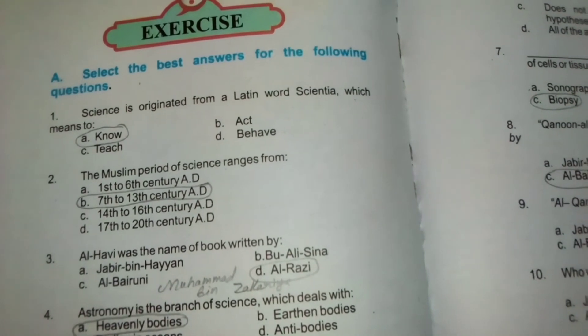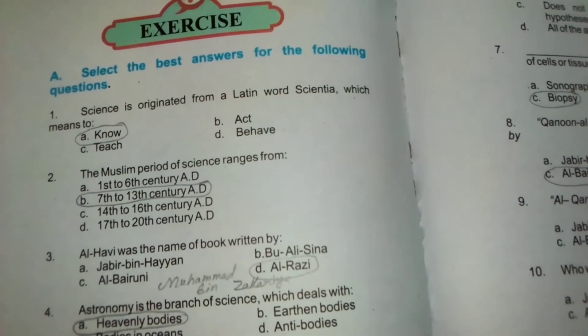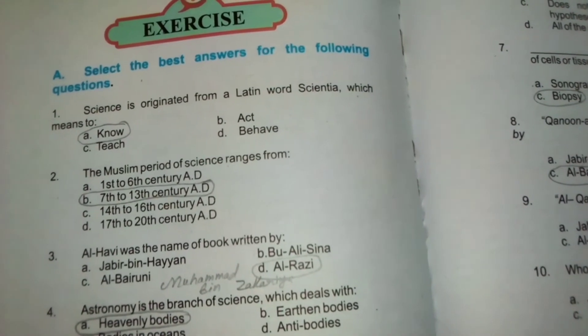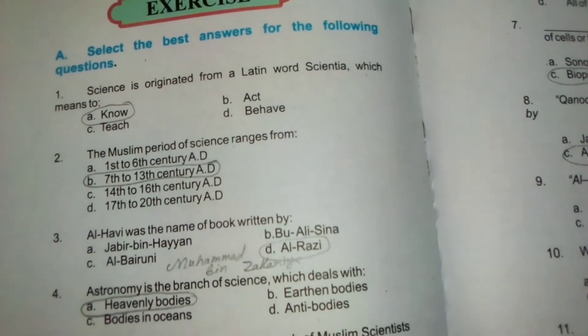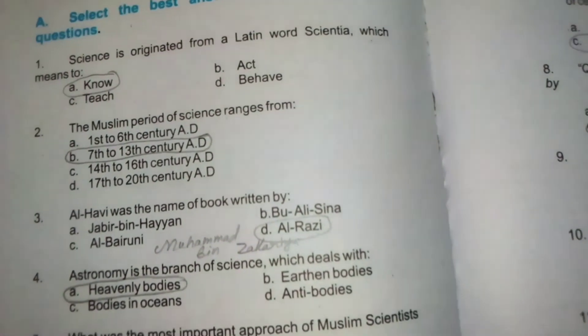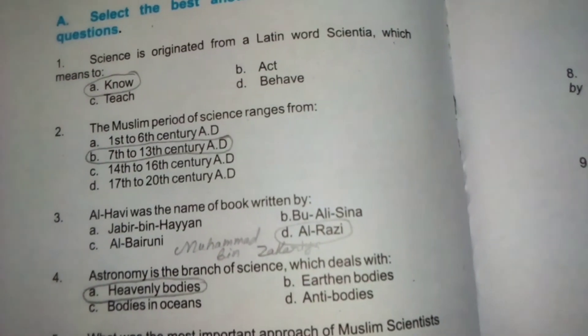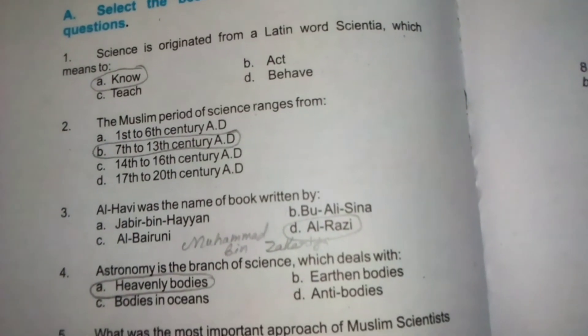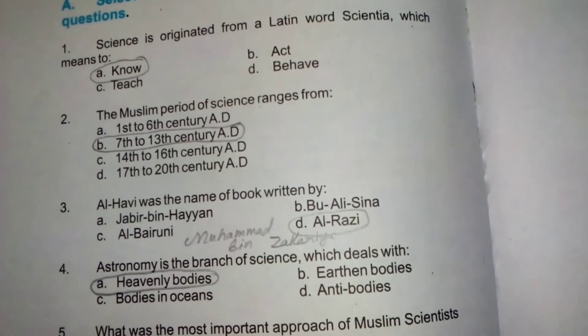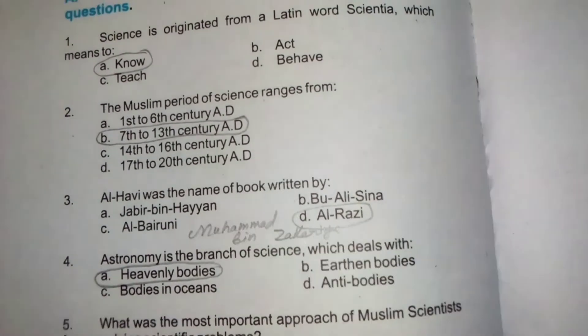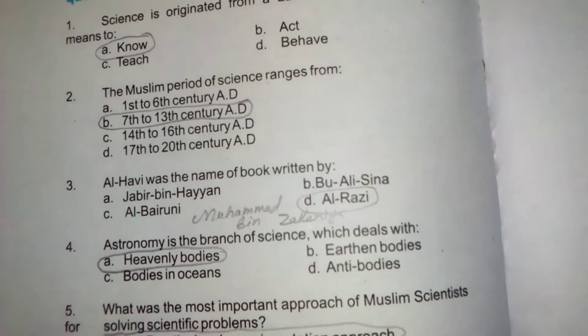Science is originated from a Latin word 'scientia' which means 'to know'. The Muslim period of science ranges from the 7th to the 13th century.